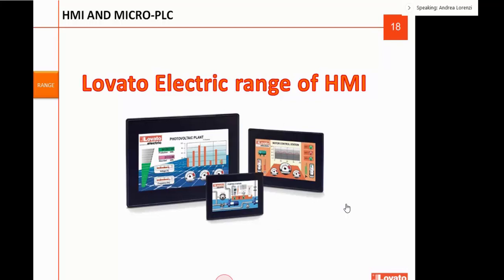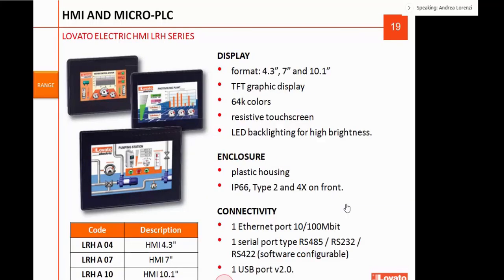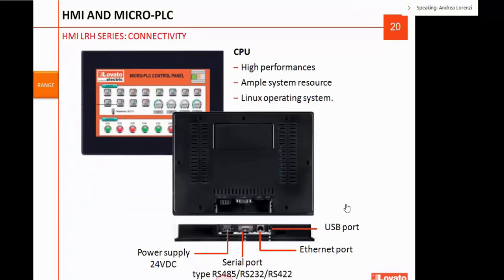Lovato has a range of HMI in three different versions according to display dimension: 4, 7, or 10 inches, with a graphic display of 64,000 colors with backlight. It has a plastic housing rated IP66 and Type 4X, and provides free communication ports: one Ethernet port, one serial port, and one USB. The serial port is a multi-port type RS-485, RS-422, or RS-232, configurable by software. The Ethernet port is used for device communication as well as the serial port. The USB port can be used to export data, reports, and other functions.